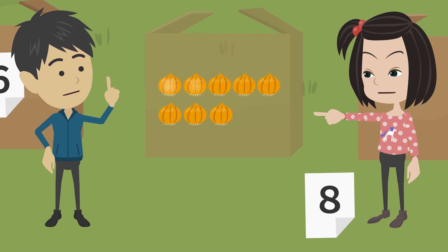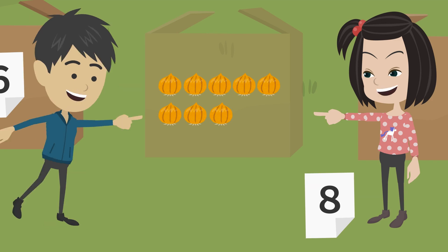1, 2, 3, 4, 5, 6, 7, 8. There are 8 onions in this box. So the label that should be on this box is... This one.